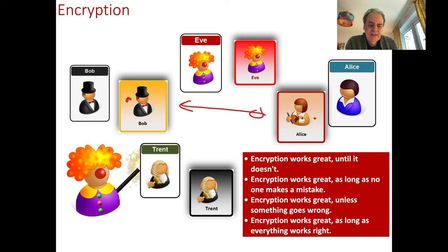Here we have Bob and Alice, and we want to make sure they can communicate without Eve eavesdropping, changing the communication, or pretending to be either Bob or Alice.